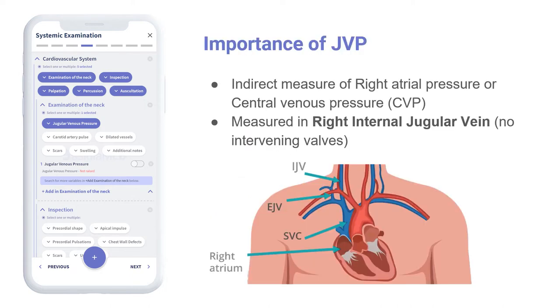JVP gives an indirect measure of the right atrial pressure — that is, the central venous pressure — since the right jugular veins are in direct continuity with the superior vena cava and the right atrium.